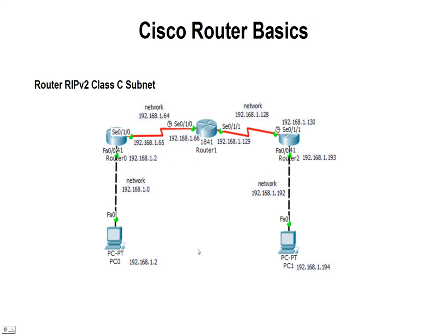Here's a typical network that we're going to create in Packet Tracer showing the different networks that we're going to be creating. We're going to have one, two, three, four separate networks.